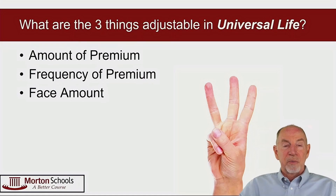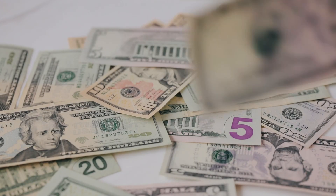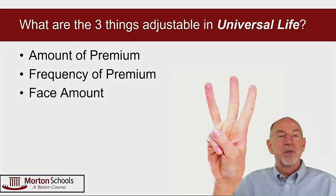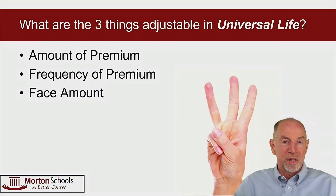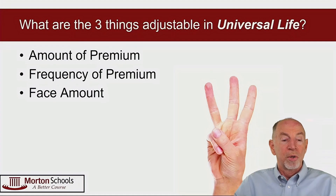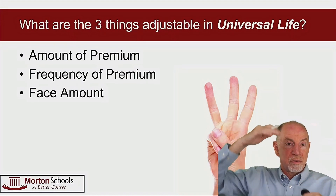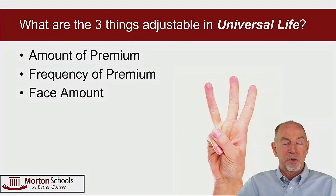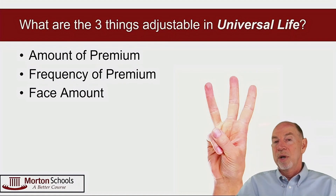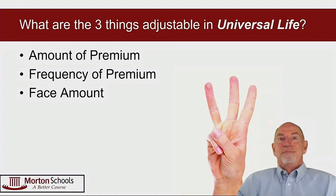The amount of premium can be anything you want — but not zero, because you have to cover at least the cost of the insurance inside the insurance bucket, which we call the mortality charge. You have to pay at least that much. The maximum is whatever would trip the seven-pay test, but that restriction only applies for the first seven years. After that, you can pay as much as you want.